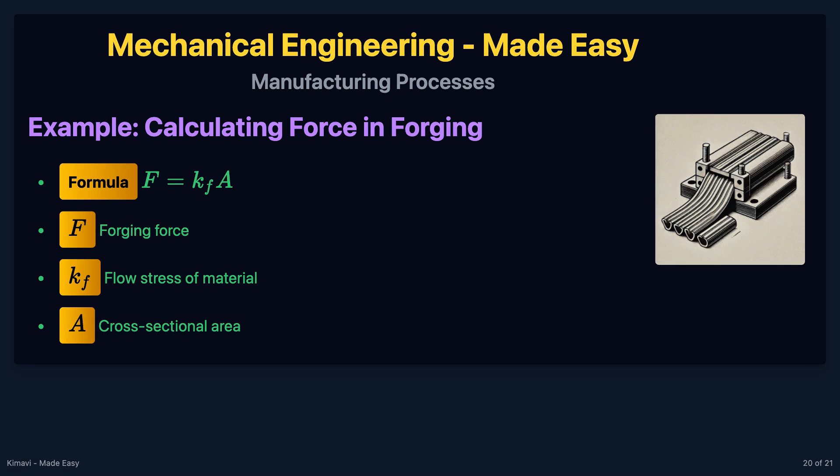For example, if the flow stress of the material is 300 megapascals and the cross-sectional area of the workpiece is 50 square centimeters, the forging force would be 15,000 kilonewtons.